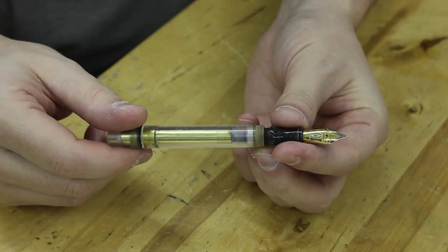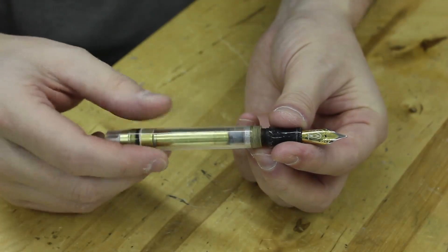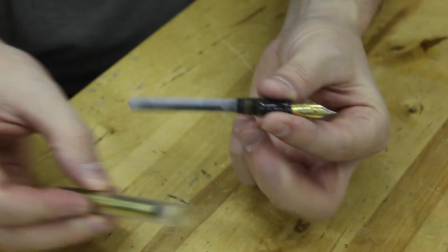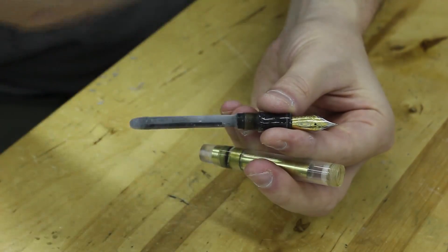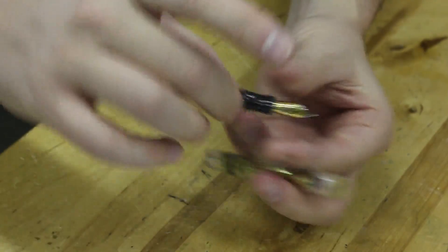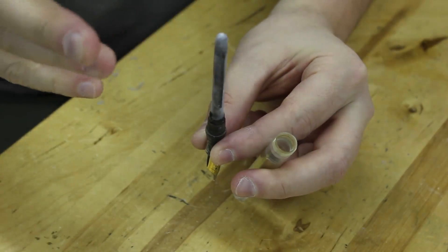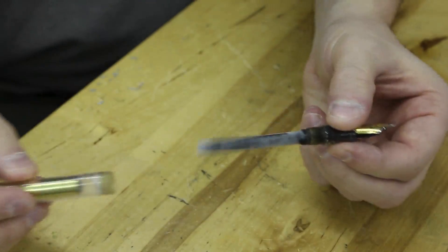But for the purposes of this demonstration, I have a clear version, and this section will unscrew. So on the back of the section, there is a sack. And of course, this sack is compressible. This is where your ink goes in. If you put this sack into ink, and you squeeze it, and let go, then it's going to draw ink up into itself, correct?